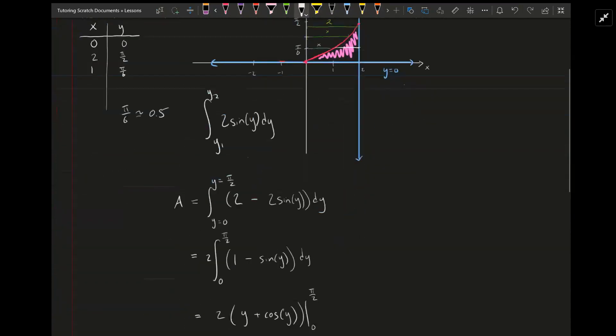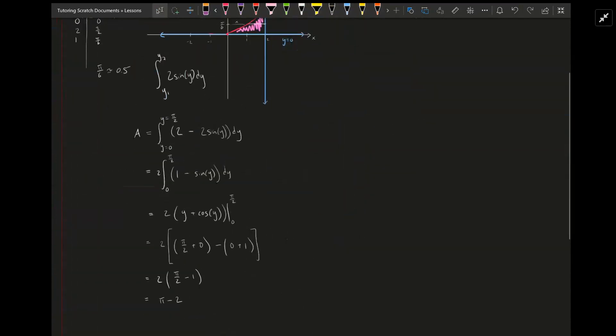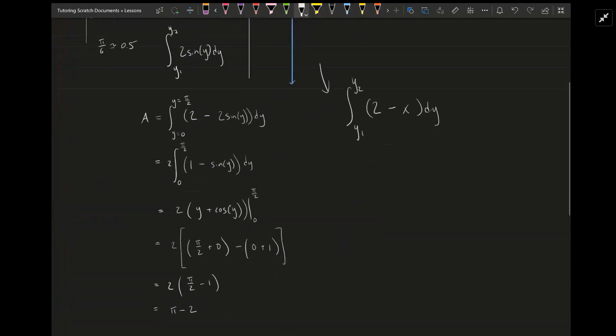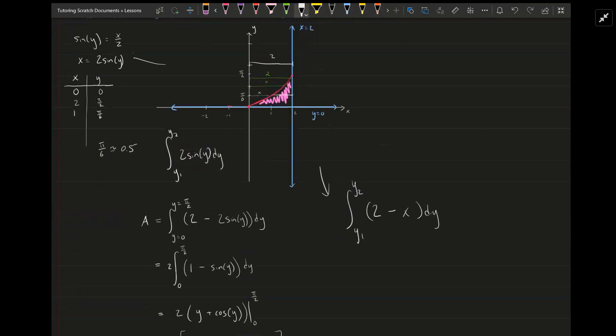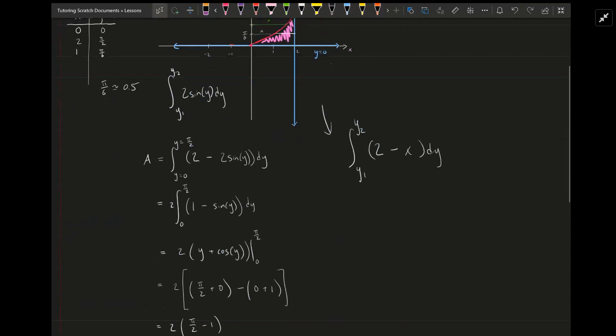So we're going to have the integral, I'll write it over here, integral from our bound y1 to y2 of 2 minus x, and then dy. We know from this part of the problem over here that x was 2 sine of y. So it's going to become integral from y1 to y2 of 2 minus 2 sine of y dy.